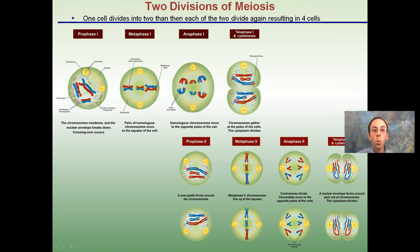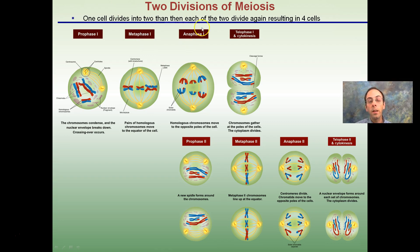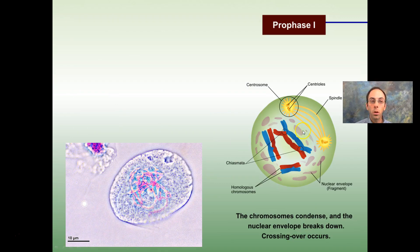In the two divisions of meiosis, one cell divides into two, and then each of those divides again, resulting in four total cells. Unlike mitosis forming two identical copies, meiosis forms four unique cells through similar phases: prophase, metaphase, anaphase, and telophase in division I, followed by the same phases repeated in division II.